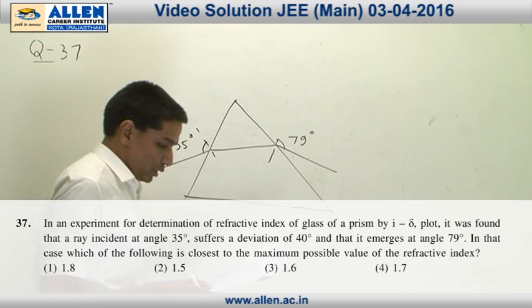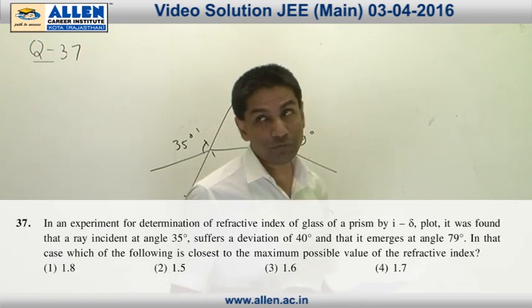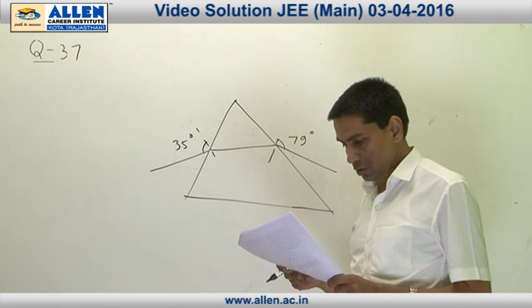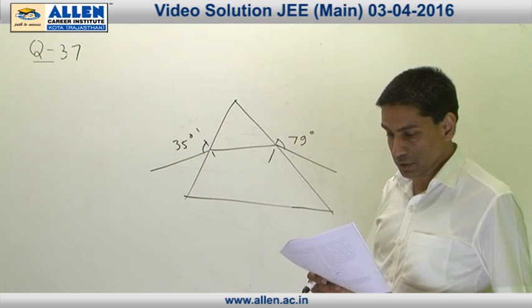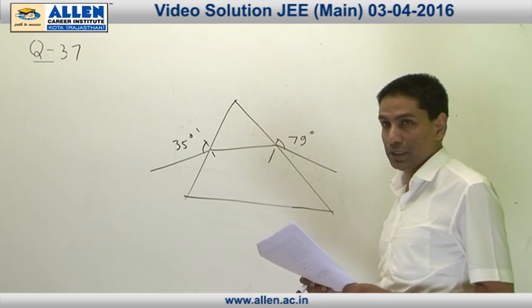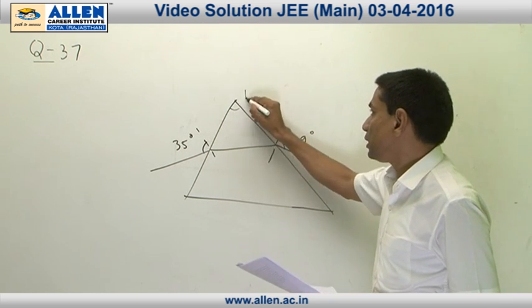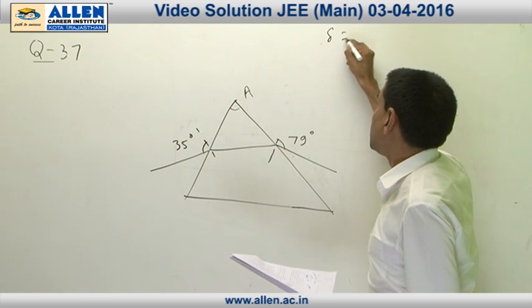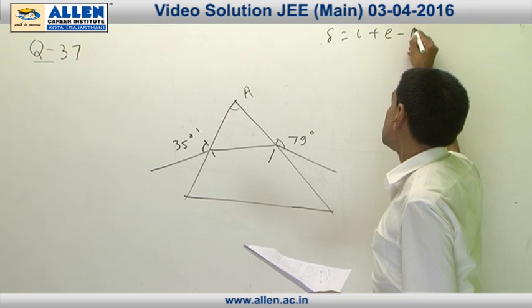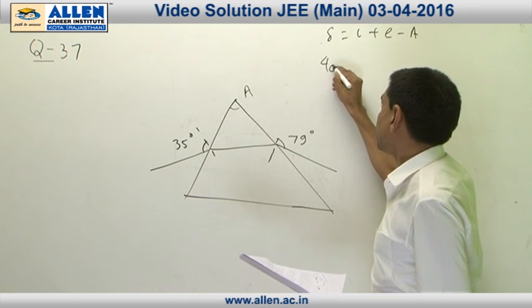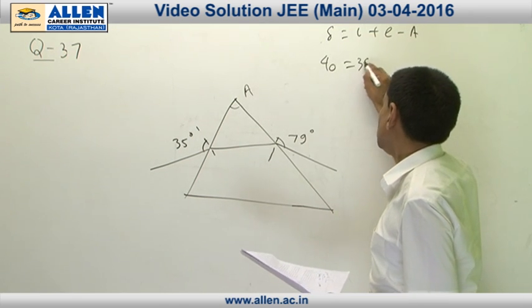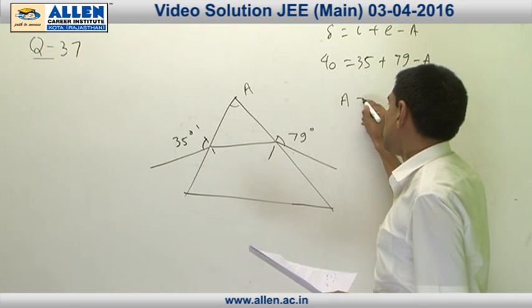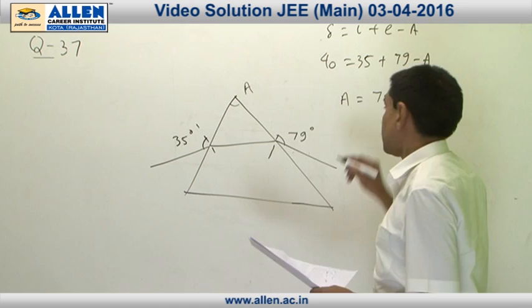In question number 37, it is asked if a ray is incident at 35 degree and emerges at 79 degree, what is the maximum possible value of the refractive index, where it is additionally given that the deviation in this case is 40 degree. First of all, let us calculate the angle of the prism. Here we can say, deviation delta is I plus E minus A. Delta is 40 degree, that is equal to 35 degree plus angle of emergence 79 minus A. From that we can say, A happens to be 74 degree.